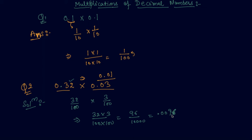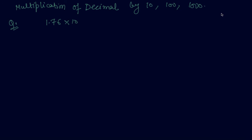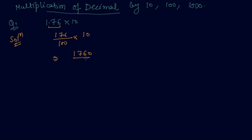Let me give you more examples on multiplication of a decimal number by 10, 100, and 1000. This is a very similar topic where we multiply any decimal digit by 10, 100, or 1000. First I will convert this decimal into a fraction — since there are two digits after the decimal, I will write two zeros, and I have to multiply this with 10. So I will write 1760 upon 100. One zero will be cancelled, leaving 176 by 10. So I can write this directly as 17.6.